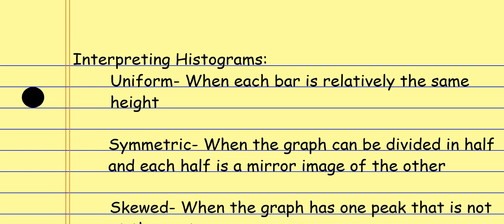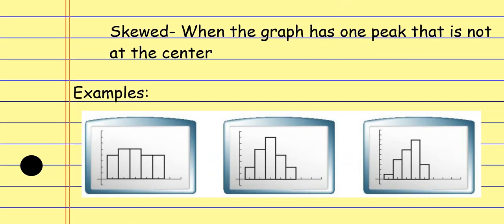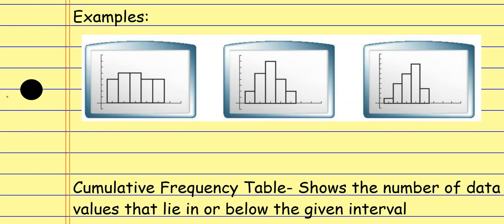When interpreting histograms we have a few situations. A histogram is uniform when each bar is relatively the same height. It's symmetric if you can cut it in half and each half looks identical — usually with the peak in the center. It's skewed when it's not symmetrical and the peak is shifted to one side. Looking at the first example graph, bars are all pretty much the same height, so we'd call it uniform.